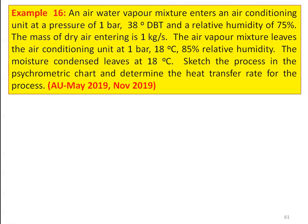We take example number 16, from May 2019 and November 2019 question paper. An air-water vapor mixture enters an air conditioning unit at a pressure of 1 bar, 38 degree dry bulb temperature, and a relative humidity of 75 percent. The mass of dry air entering is 1 kilogram. The air-vapor mixture leaves the air conditioning unit at 1 bar, 18 degree Celsius and 85 percent relative humidity. The moisture condensed leaves at 18 degree Celsius.